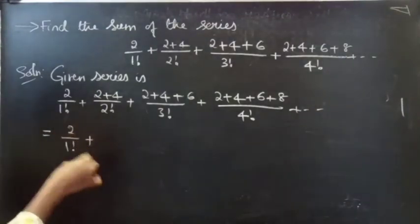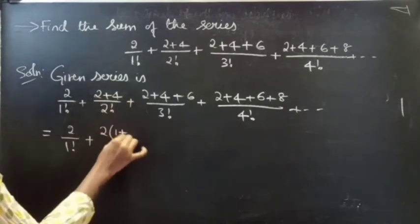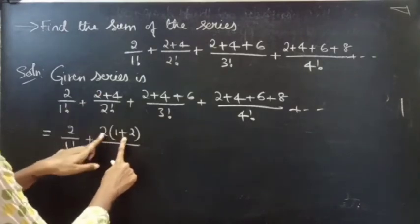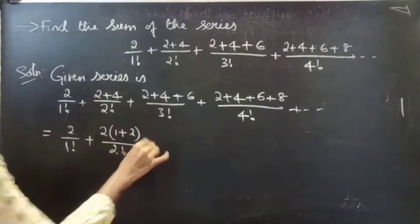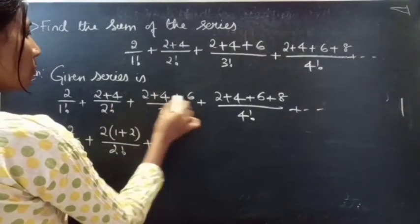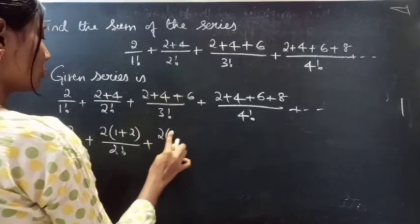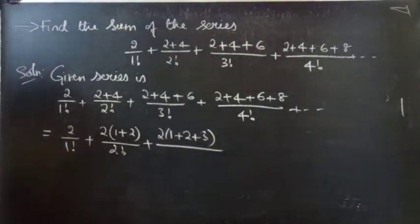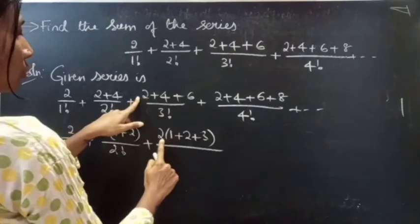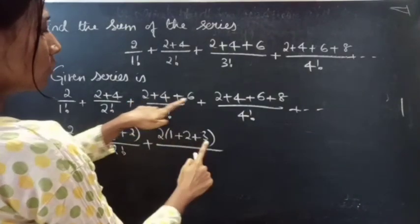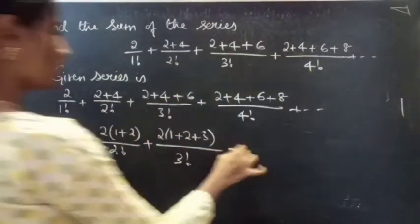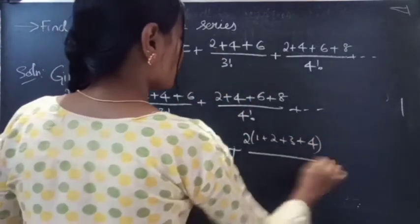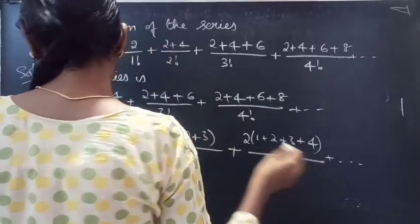Take 2 common from the first term: 2/1!. Take 2 common from the second term's numerator to get 2·(1+2) = (2+4)/2!. Take 2 common from the third term's numerator to get 2·(1+2+3) = (2+4+6)/3!. Similarly, 2·(1+2+3+4)/4! and so on.